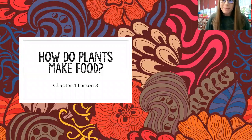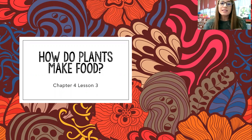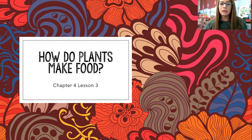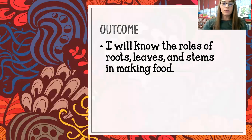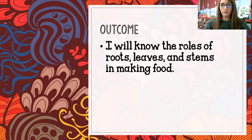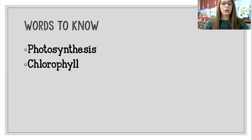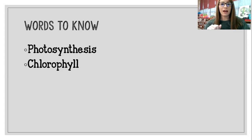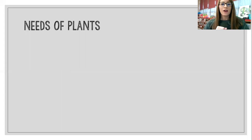Hey guys, it is a Monday which means we are starting another lesson in science. This week we're doing chapter four, lesson three, and we're talking about how plants make food. Today's going to be a really quick lesson but tomorrow's going to be a little bit more in depth. Our outcome for this week is that we're going to know the roles of the roots, stems, and leaves of the plant when it comes to making their food. The words we need to know this week are photosynthesis and chlorophyll — two really important words we're going to have to know by the end of the week.